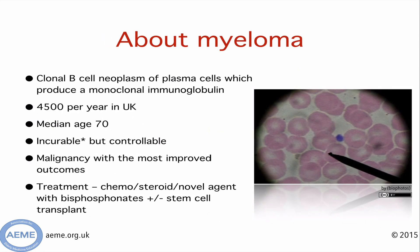Myeloma is a malignant expansion of plasma cells which produce a monoclonal immunoglobulin. There are around 4,500 cases in the UK and the median age is 70 years old. It is generally incurable but can be controlled for many years. There are many new treatments available, and because of this it is seen as one of the malignancies with the most improved outcomes overall. The mainstay of treatment is combination chemotherapy involving a steroid, chemotherapy, and a novel agent. The novel agents often include lenalidomide, thalidomide, or the proteasome inhibitor bortezomib. Bisphosphonates are used alongside these agents to improve bone health.